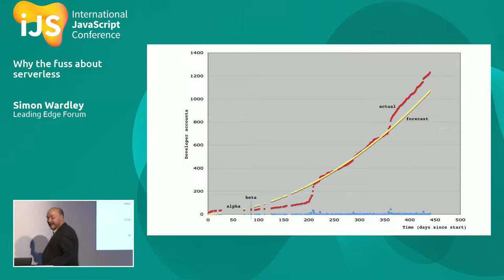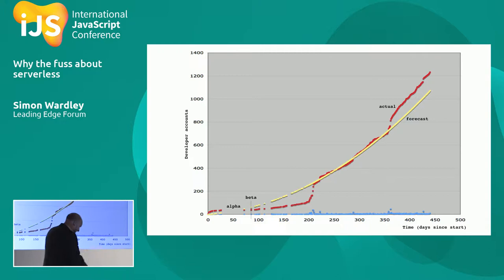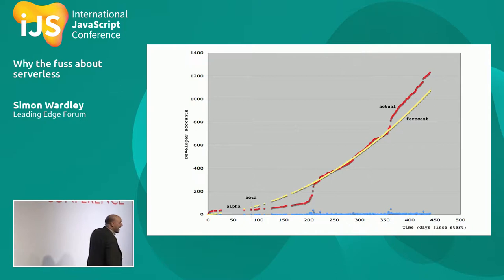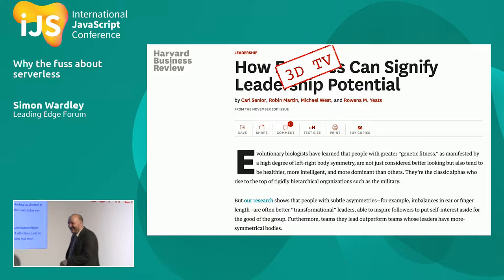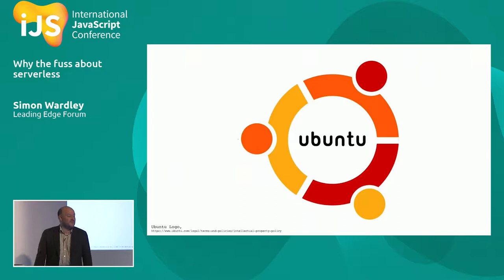Unfortunately, a parent company had one of those consultancy firms come in and say the things we were doing — cloud, 3D printing, mobile phones as cameras — were not the future, because they'd looked into their crystal ball in 2006 and seen that the future was 3D television. So they shut it all down and spent a billion on 3D TV. Does anybody own a 3D TV? Anybody use one? So that's what happened.